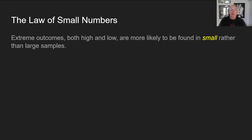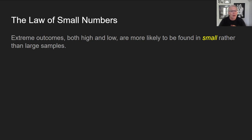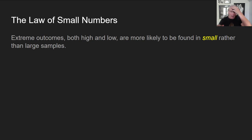Let's talk about the law of small numbers. When you take small samples — like your personal experience, which is a very small sample of the world — extreme outcomes, either high or low, are more likely to be found in small rather than large samples. If you've only been to a few places, or never left a small town, the world will look very different to you than if you'd lived in New York City. A small-town experience is not representative of the world.